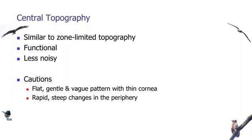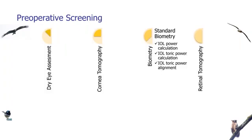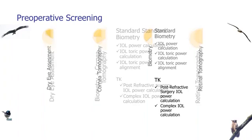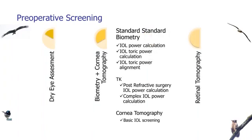For preoperative screening, we have standard biometry, we can do IOL power calculation, we can do IOL toric power calculation. With TK it gives us good post-refractive surgery IOL power calculation. I think TK will also help us in complex IOL power calculation as well. But today, with this integrated corneal tomography, even though it's limited to the center, it adds a new dimension. It is able to give us at least some basic IOL screening.